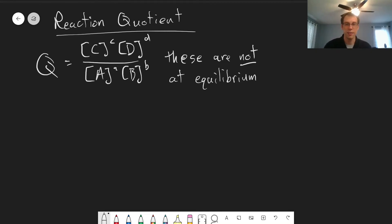For a system that's not at equilibrium, Q can be any value, right? But K is fixed. K is always a constant, which is why it's given that term, equilibrium constant.